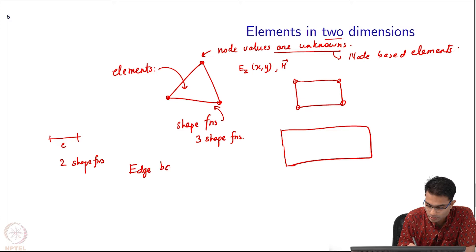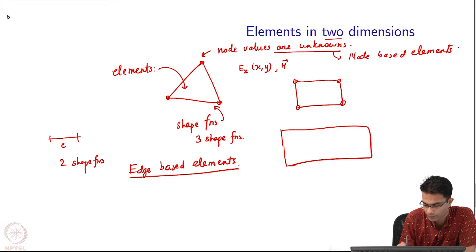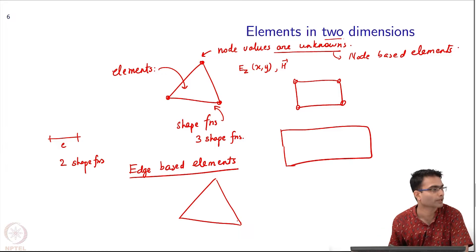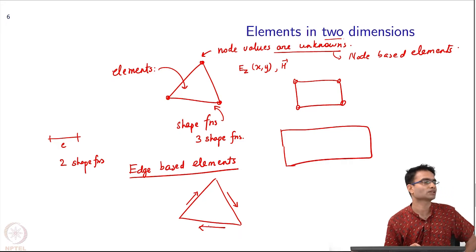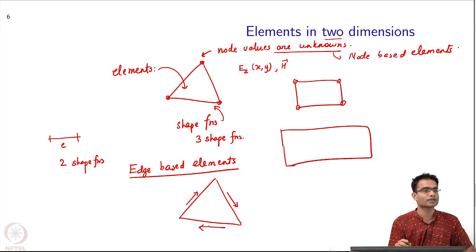It is also possible to define what are called edge based elements. We will look at both node based and edge based elements. The element shape remains the same - it is a triangle. Now, the unknown over here becomes the value of a vector along a certain edge.